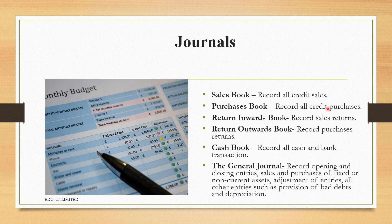Do not confuse the sales book and purchases book with the general journal. In the sales and purchases books, we record goods and services bought for resale — the main operations of the business. Fixed assets are not bought for resale, so their sales and purchases are recorded in the general journal. Adjustments are also recorded in the general journal, as are all entries not covered by the first five books — including provision for bad debts, provision for doubtful debts, and provision for depreciation.